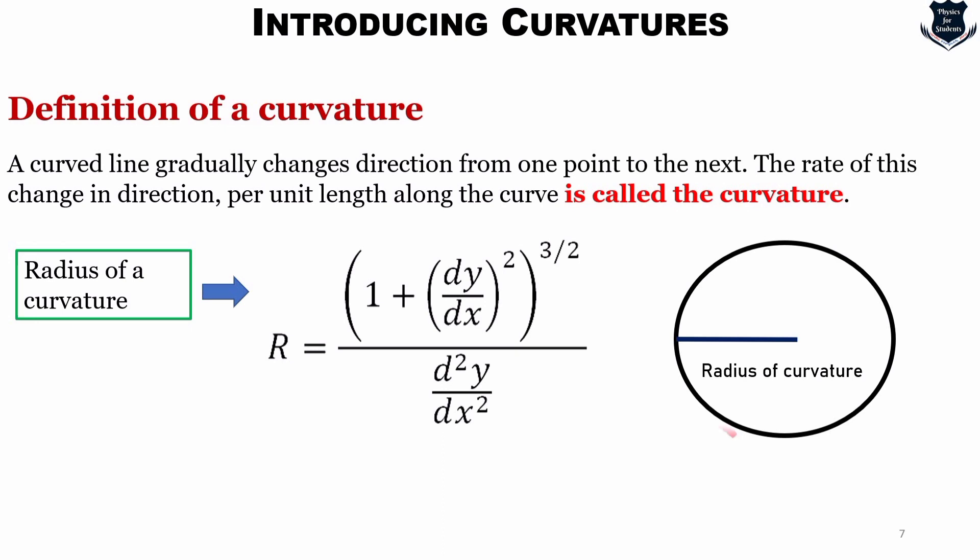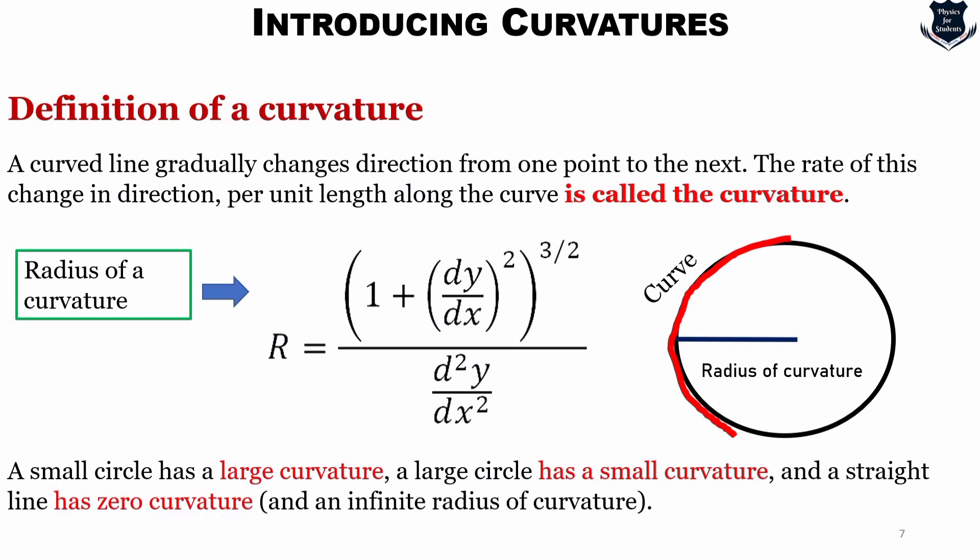So you see this is the radius of a curvature and this red line as you see this is basically the curve. So a small circle again comes up has a large curvature and a large circle has a small curvature and a straight line has a zero curvature. So what I can tell from here, if you use units of radians to measure the angles, I mean to say 1 radian equals 180 degrees upon pi, then it turns out that 1 upon curvature is the radius of curvature. In other words, it is the radius of the arc of the circle which would most closely approximate that part of the curve. So state it in another way, if the direction of the curve changes at a rate of 1 radian per inch, then the radius of the curvature would be 1 inch.